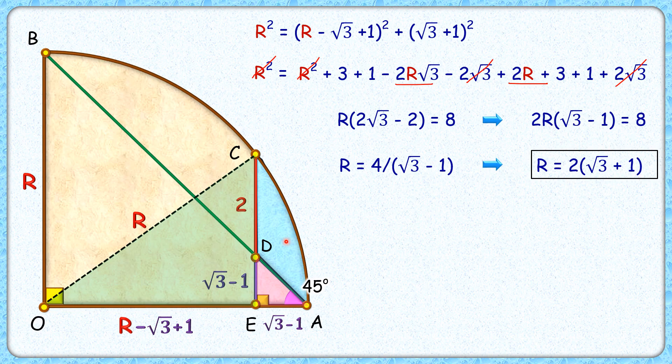Now that we have the value of R to find this shaded region, we'll basically need this angle here, that's angle theta. Why we need it? Because this shaded region will be nothing but area of this sector minus green triangle minus pink triangle. So let's find this angle theta.